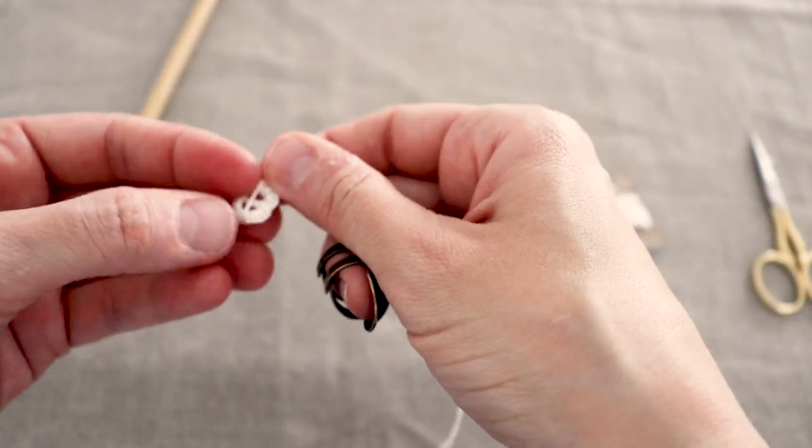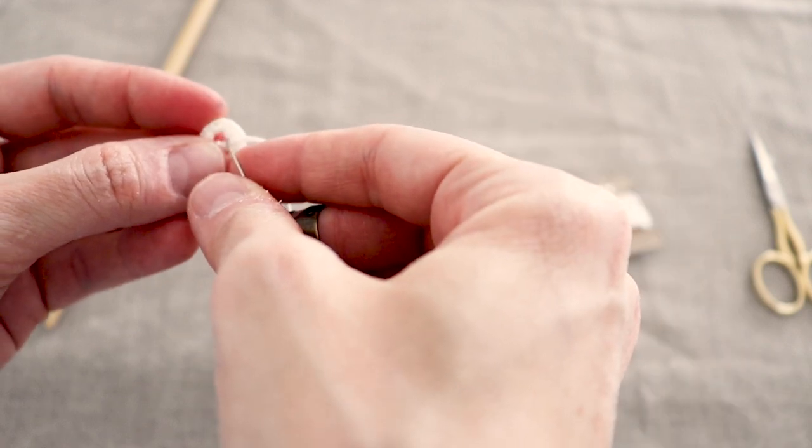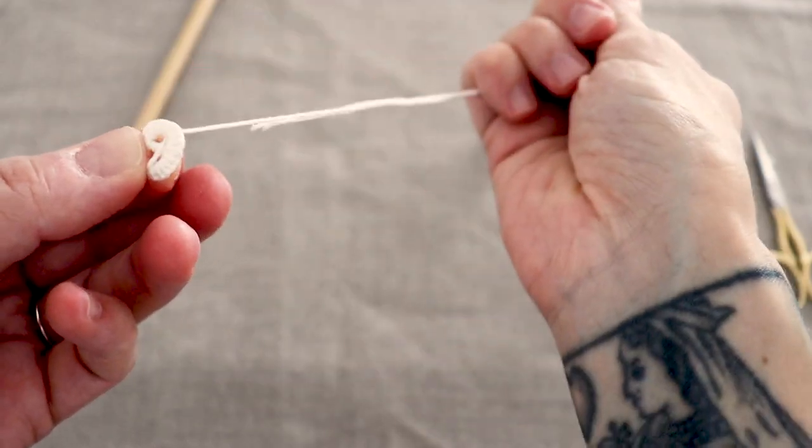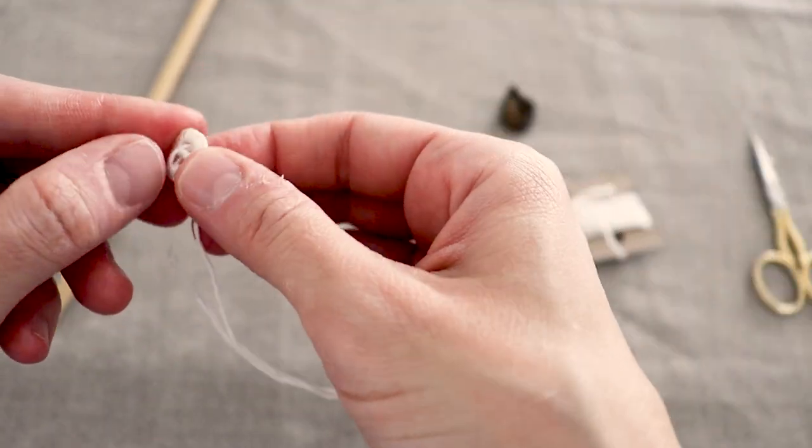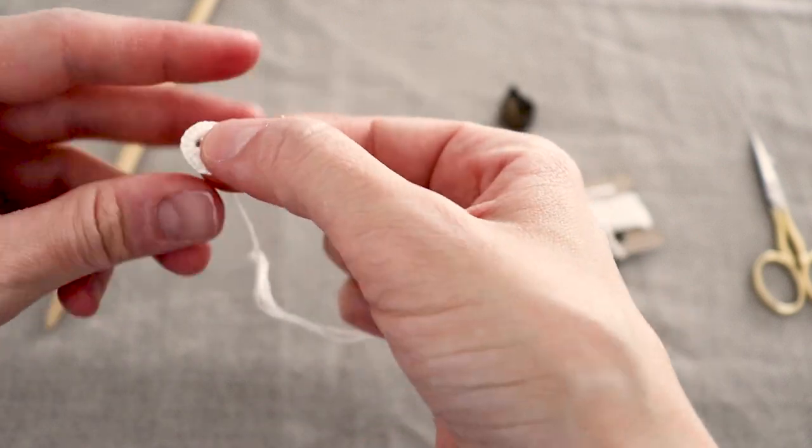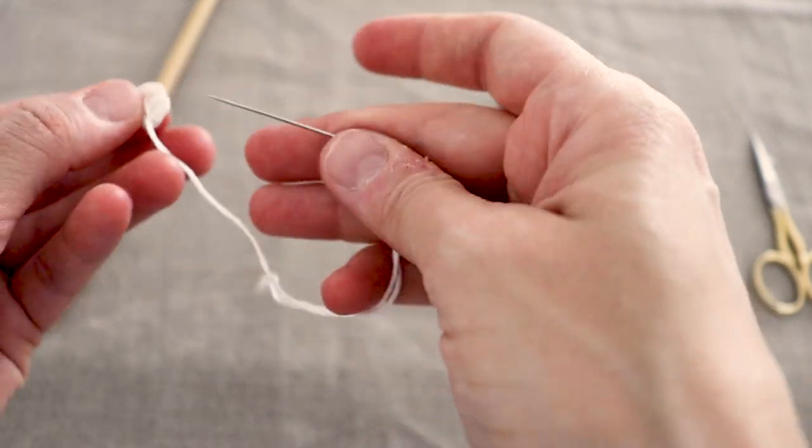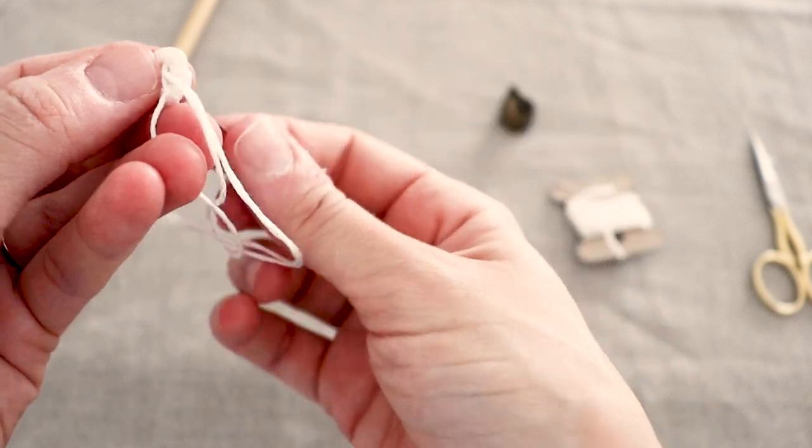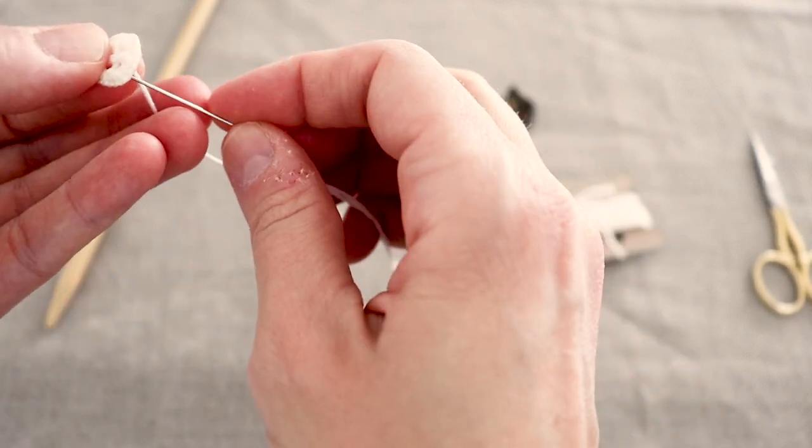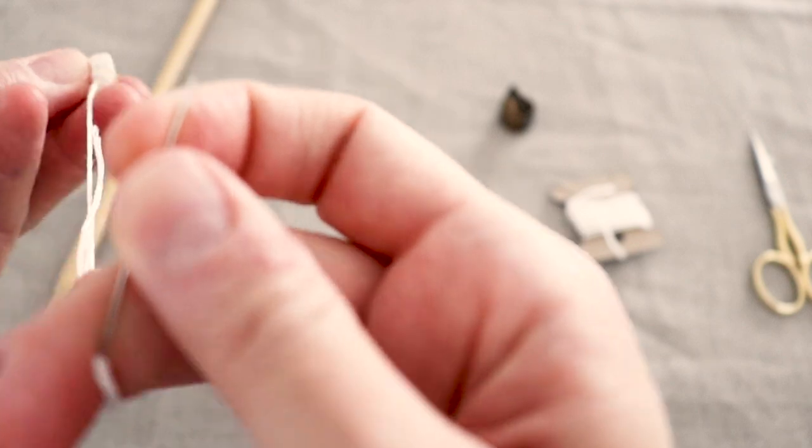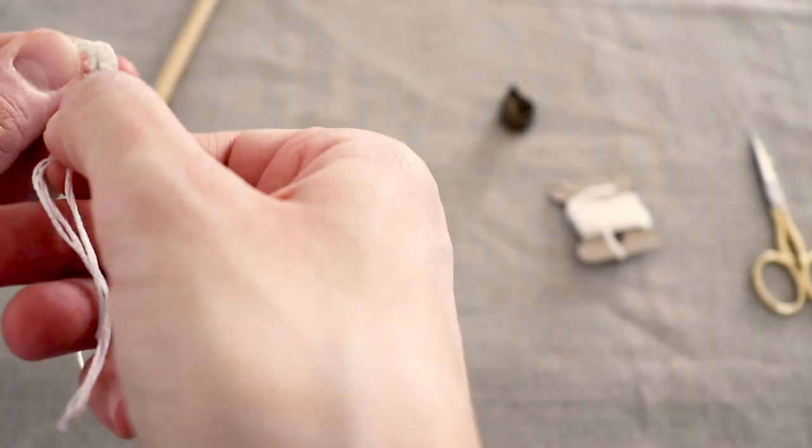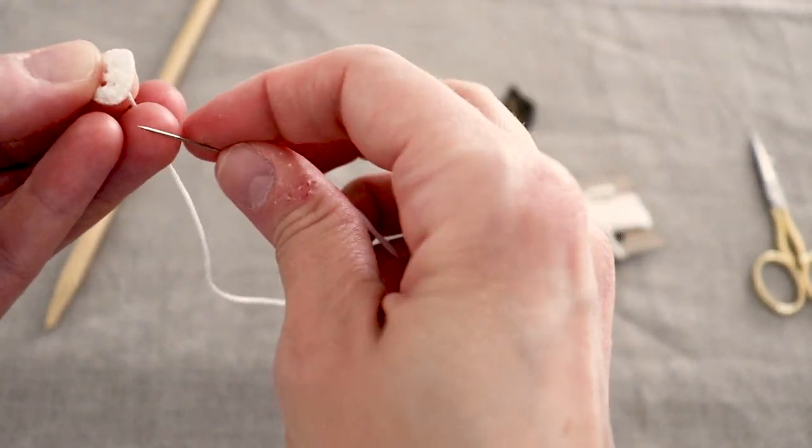The other line of the cross is created the same way. I like to count the number of wraps on each side of that first line to ensure they're equal, and wrap once around the center line when you come to it to connect the cross in the center.